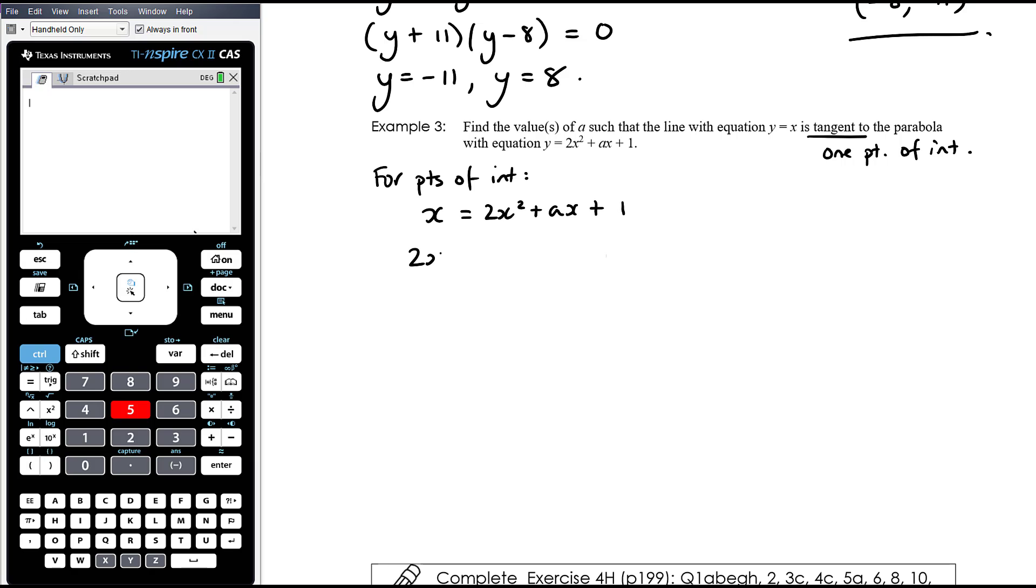So that is x equals 2x squared plus ax plus 1, which means 2x squared plus ax minus x plus 1. Or 2x squared plus a minus 1 times x plus 1. Okay, if we want just one point of intersection, we need this equation to have one solution. Which means we need the discriminant of this equation to be equal to 0.